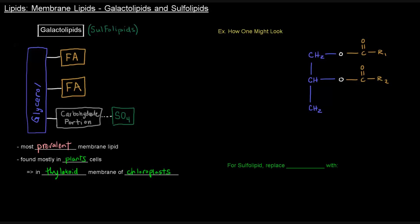So how might one of these look? Well, of course we have the glycerol backbone and the two fatty acetals, and then we have to have a carbohydrate portion, so I've drawn one here.